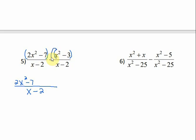But this negative needs to be distributed to both of these terms. So that would be minus x squared. Negative times negative would be a positive 3. Now I can combine my like terms. 2x squared minus x squared would be x squared. Negative 7 plus 3 would be negative 4 over x minus 2.